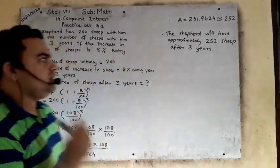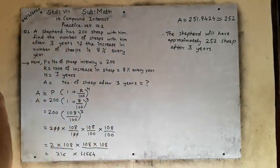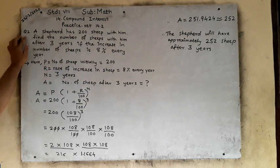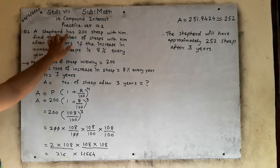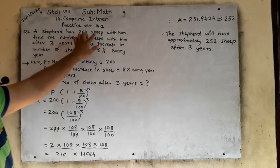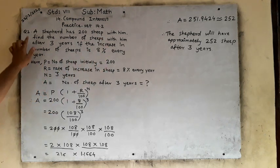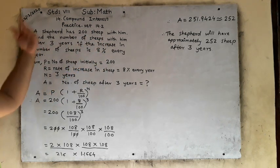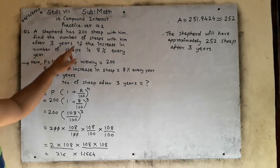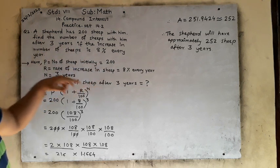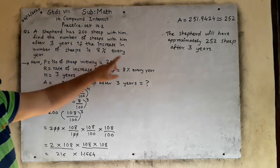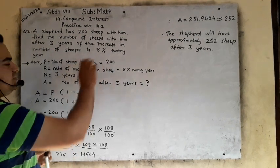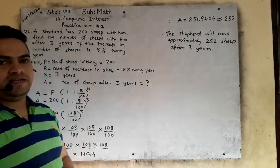Please pay attention. Practice step 14.2 question number 2 is: a shepherd has 200 sheep with him. Find the number of sheep with him after 3 years, if the increase in number of sheep is 8% every year. So 8% — it means it is the rate.